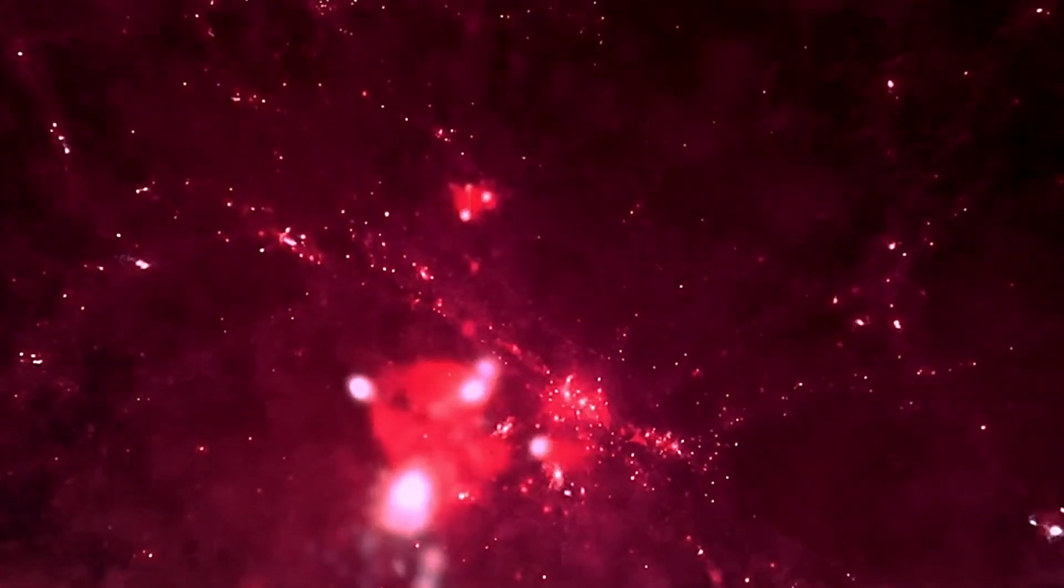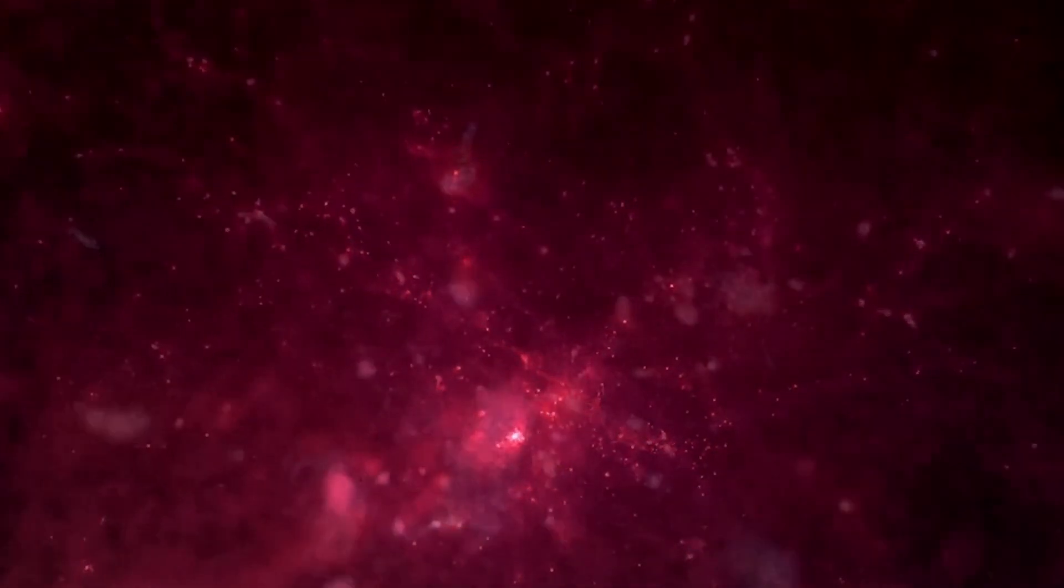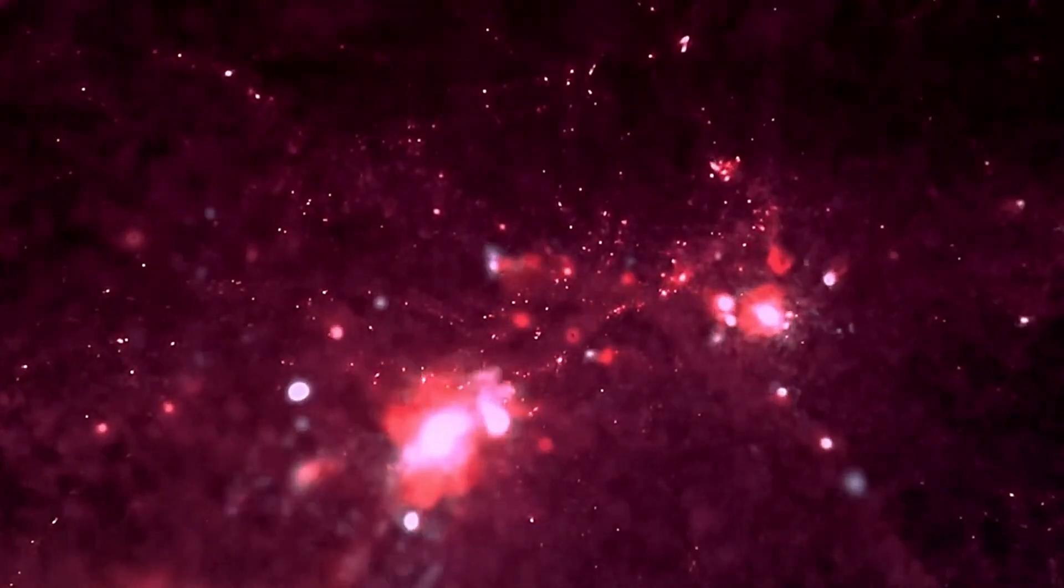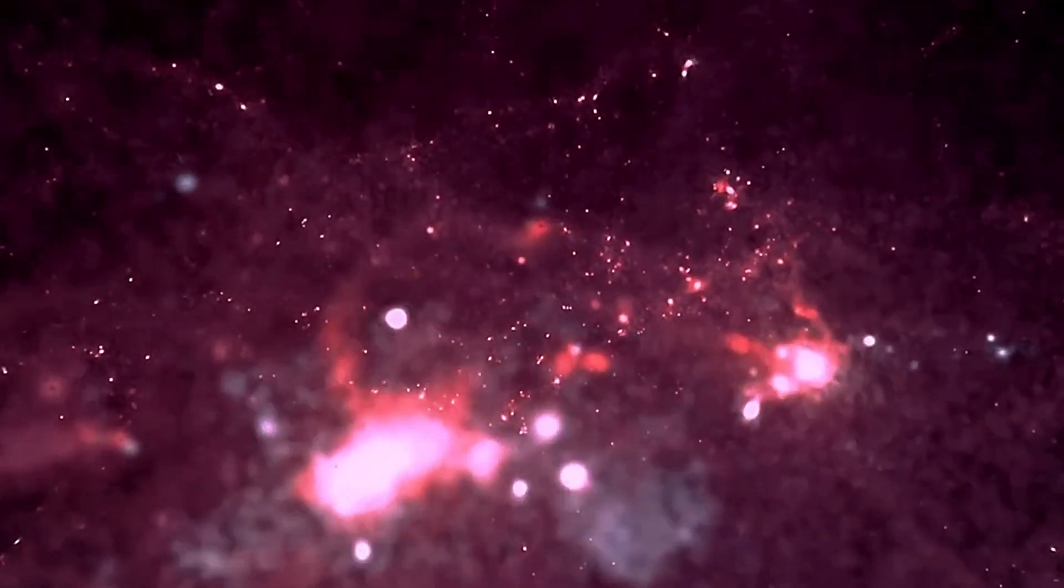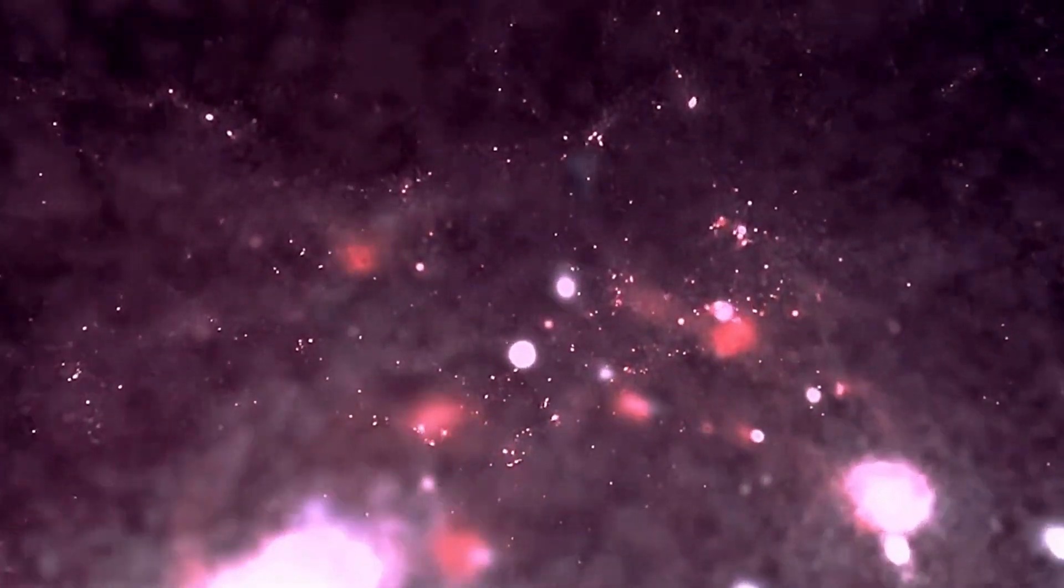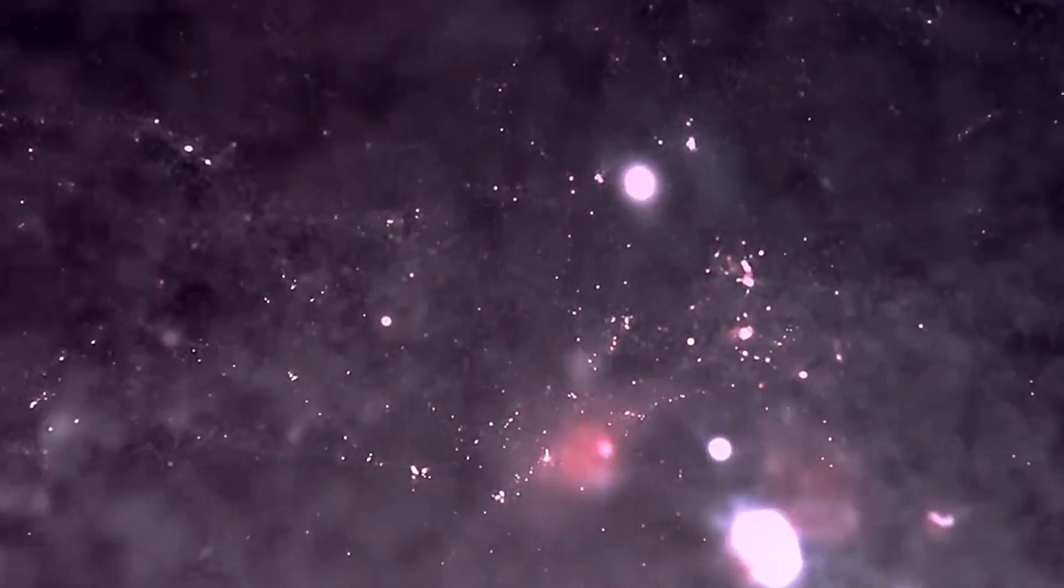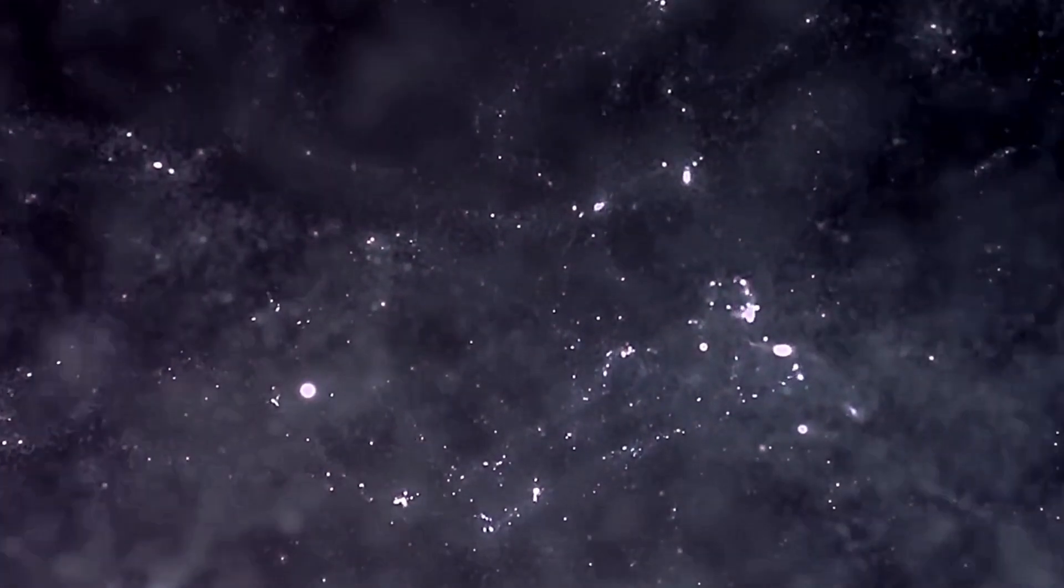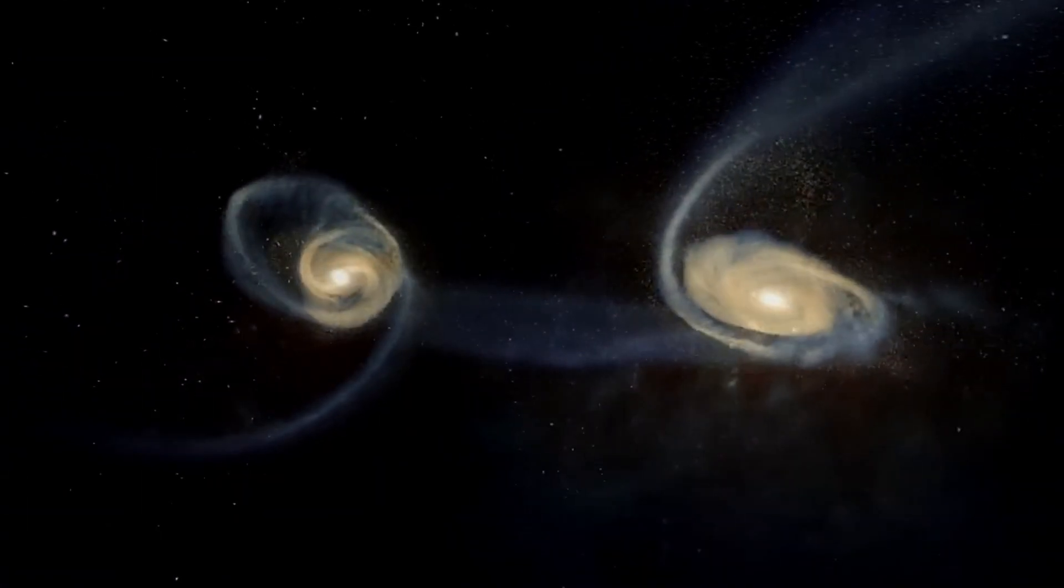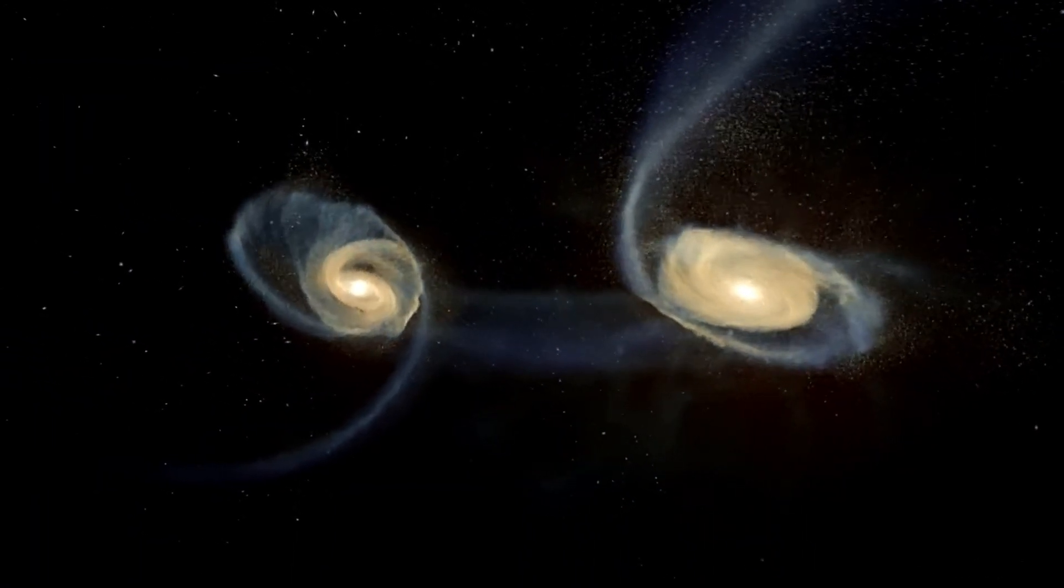These epochs demonstrate that the universe didn't come into existence in a singular event, but rather evolved over time through a series of intricate and interconnected phases. This step-by-step expansion and cooling process explains why the universe is so orderly today, despite its seemingly chaotic beginnings.